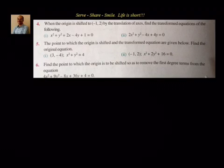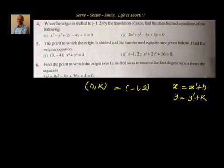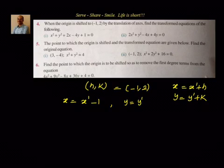The first thing we write down is h, k equal to (-1, 2). The equation given is in terms of x and y. We know x equals x-dash plus h and y equals y-dash plus k. So x equals x-dash plus (-1), meaning x equals x-dash minus 1, and y equals y-dash plus 2. In place of x and y we substitute x-dash minus 1 and y-dash plus 2 to find how the equation changes.